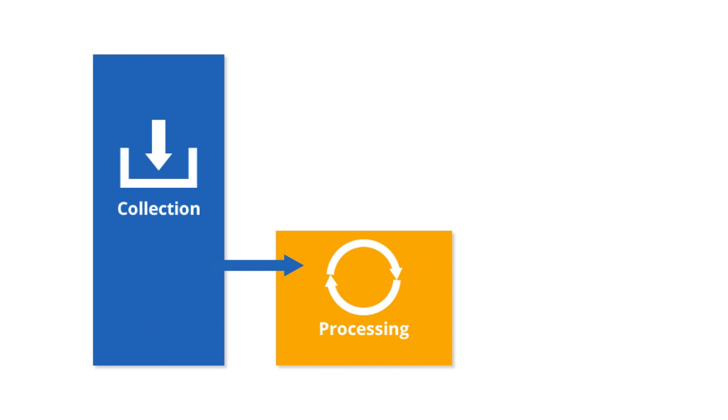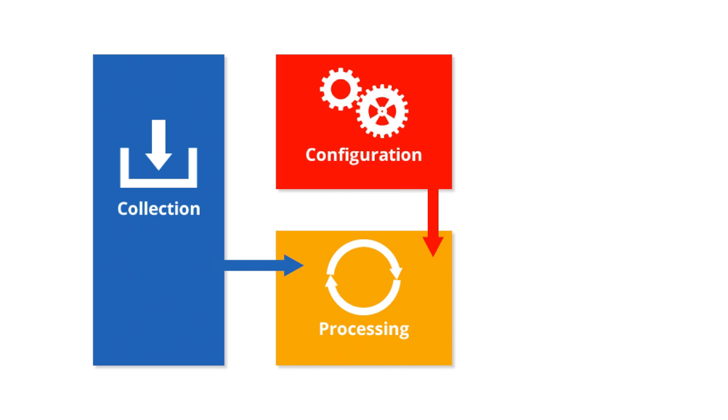In this step, Google Analytics also applies your configuration settings to the raw data. For example, you can choose to add filters to your data. A filter can include or exclude certain types of data from your reports, like excluding data from your own internal users.